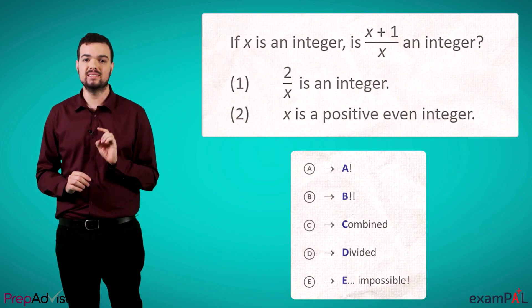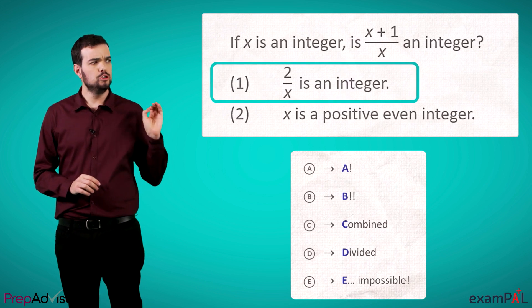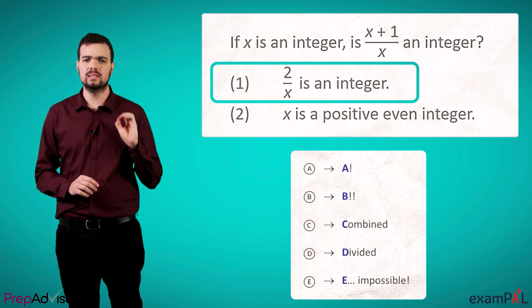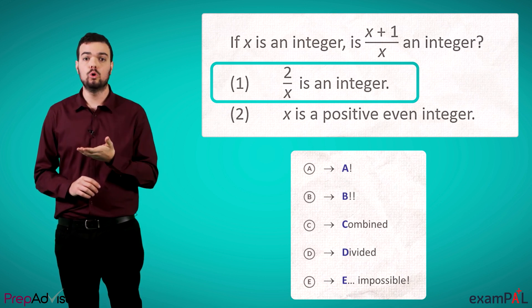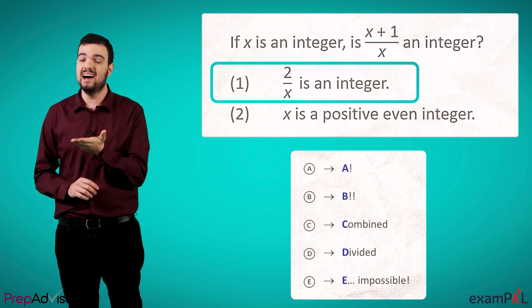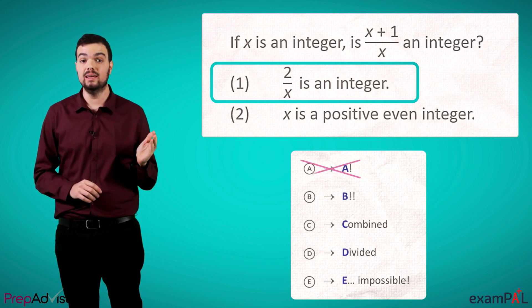So, returning to the example, let's see how we can solve it logically. Let's look at 1. 2/x is an integer. Well, this means x could be 1, 2, or negative 2. Not enough information to pick between them. Let's cross out A and D.